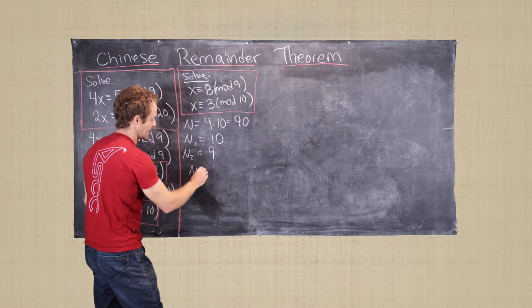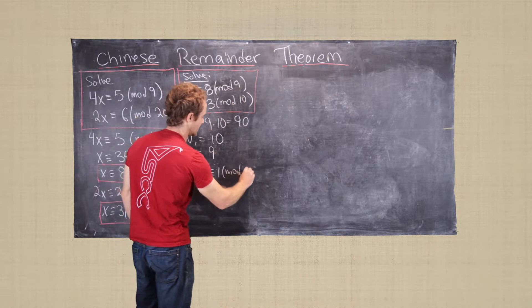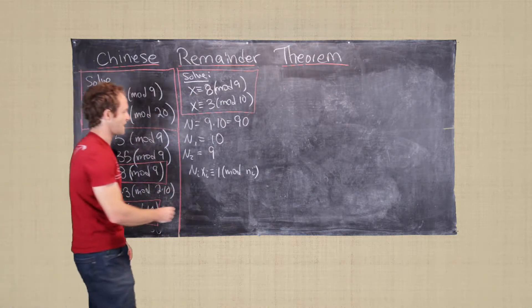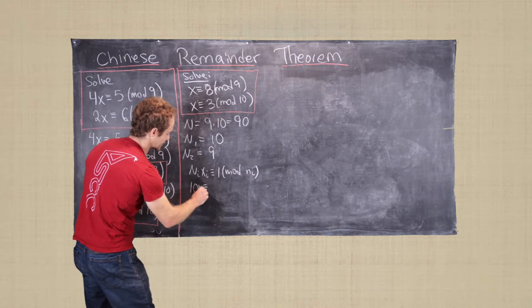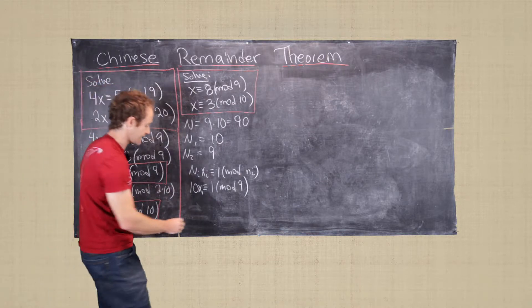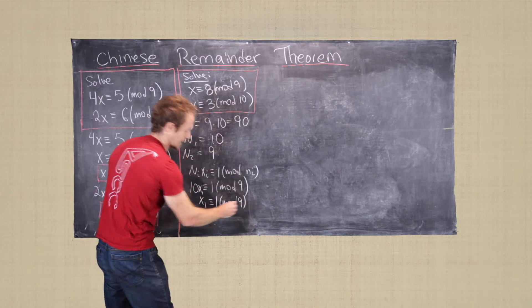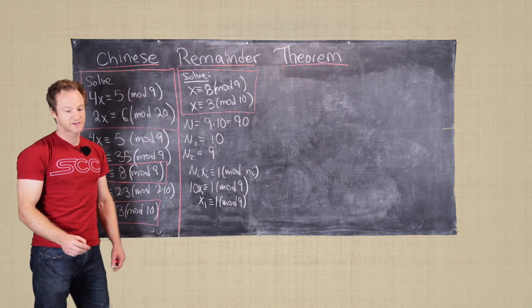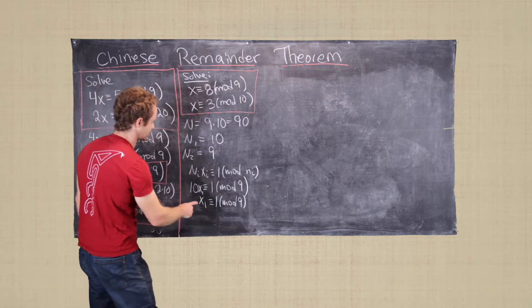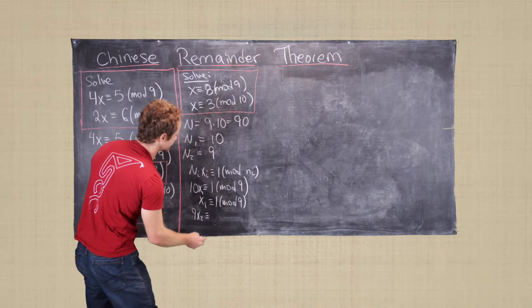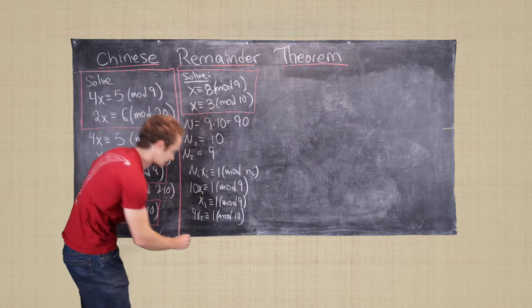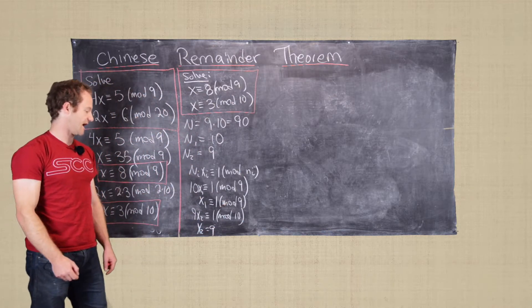And then recall that we want to solve n_i x_i is congruent to 1 mod little n_i. So these x_i's are important to constructing the solution. So little n_1 is 9 and little n_2 is 10. So that means we want to solve 10 x_1 needs to be congruent to 1 mod 9. But notice 10 is congruent to 1 mod 9. So that means we get x_1 is congruent to 1 mod 9. So the next thing we need to do is the following. So now we can write this as 9 x_2 is congruent to 1 mod 10. And we notice that 9 times 9 is 81, which is 1 mod 10. So that means x_2 we can take to be 9. So we have x_1 is 1 and x_2 is 9.